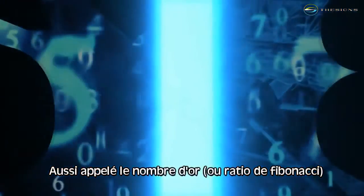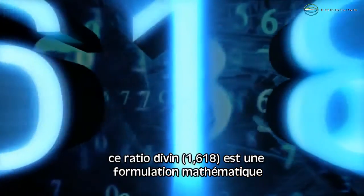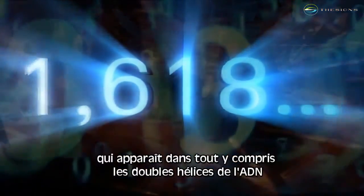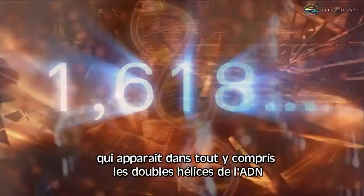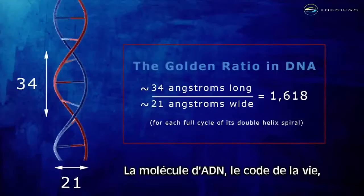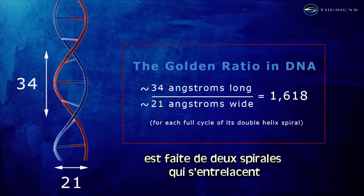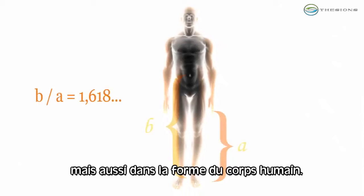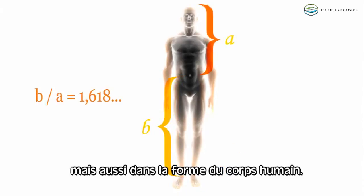Also known as the golden mean, the divine proportion is a mathematical formulation exhibited in everything from the double helix of DNA. The DNA molecule, the code for life, is made up of two intertwining spirals. We find the 0.618 ratio between the helix's width and cycle length, all the way to the form of the human body itself.